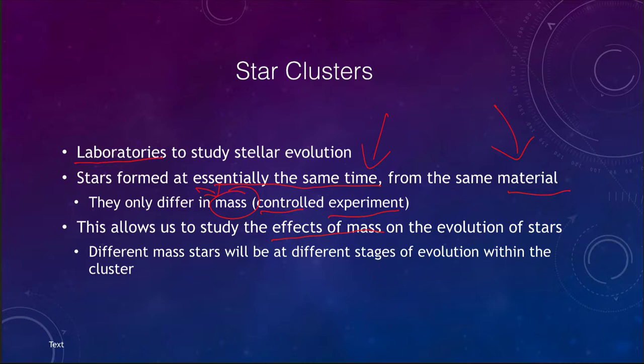What we find is that different-mass stars will be at different stages of evolution. High-mass stars evolve very quickly, taking only millions of years, while low-mass stars can take billions or even trillions of years. So we can see all of those different stages simultaneously within a single cluster.